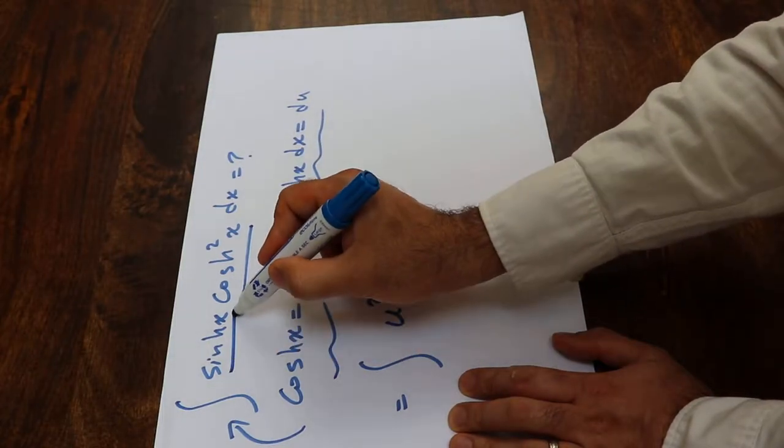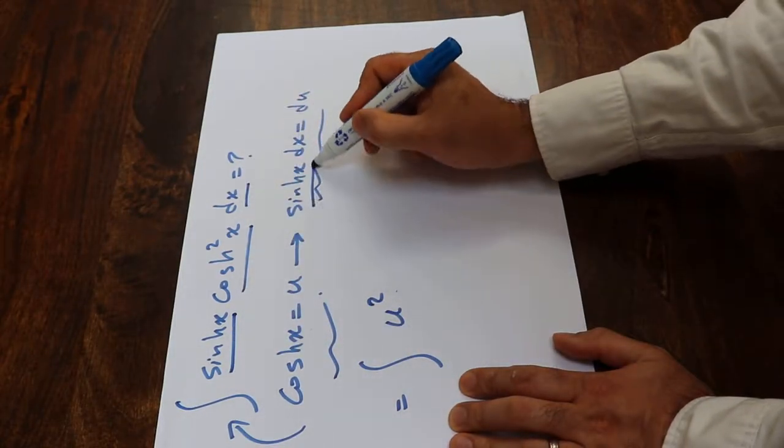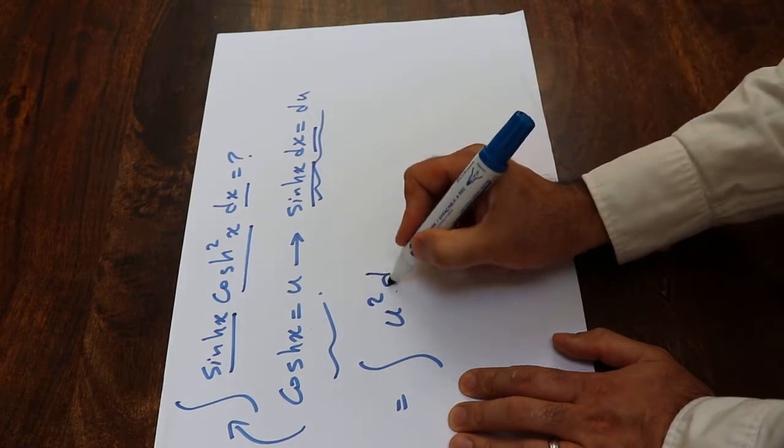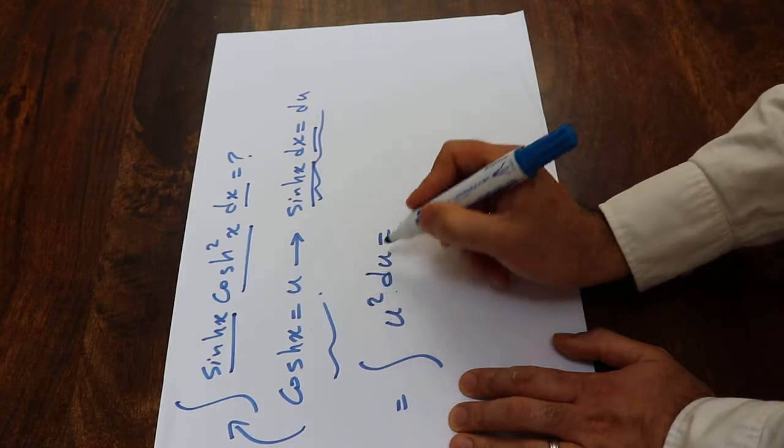And instead of hyperbolic sine x times dx, I write du. So the integral of u squared du,